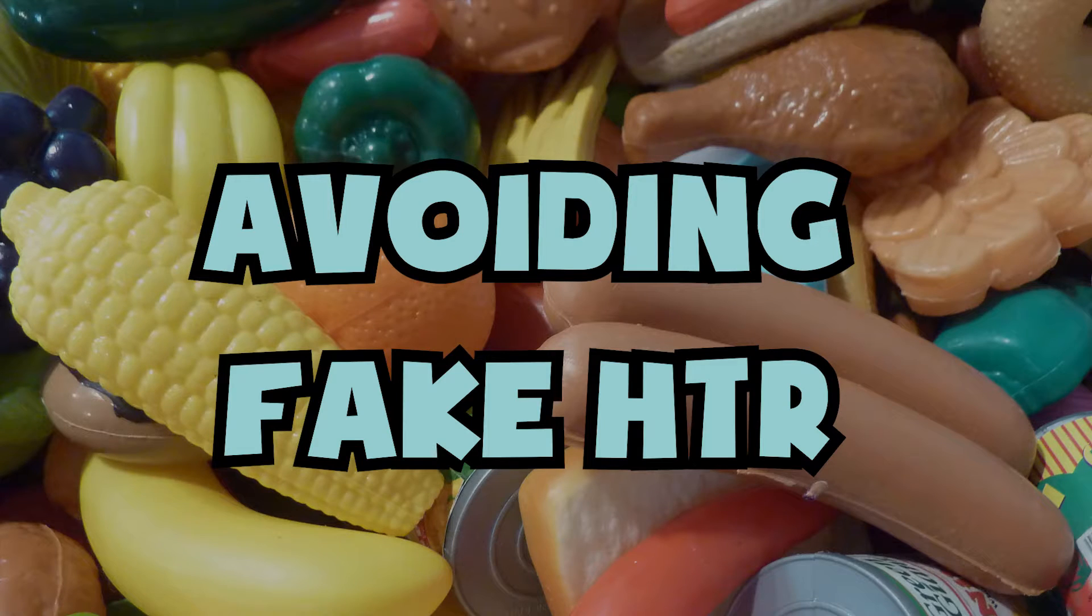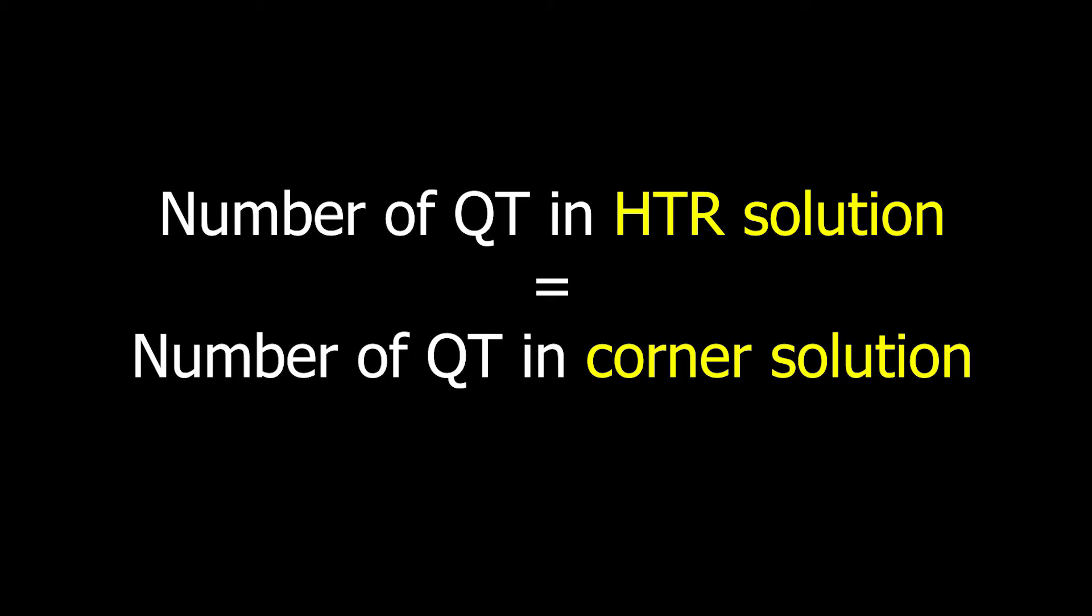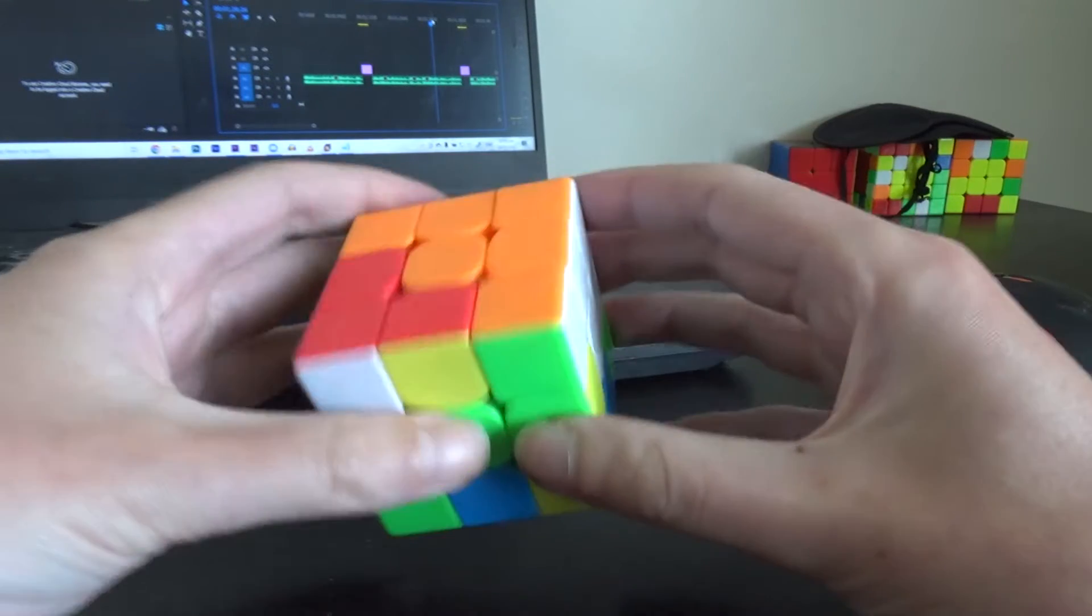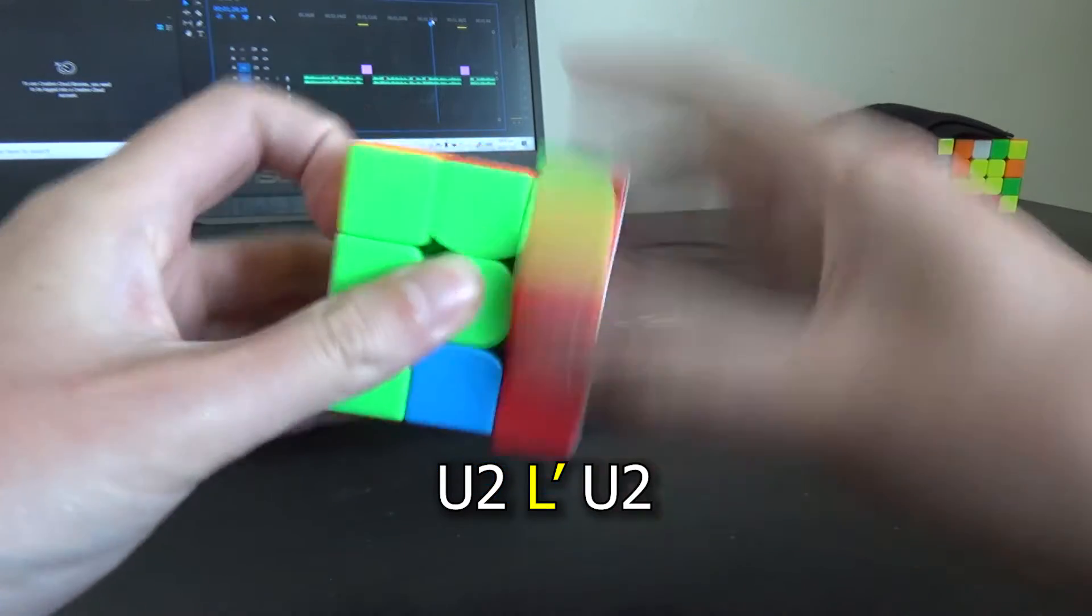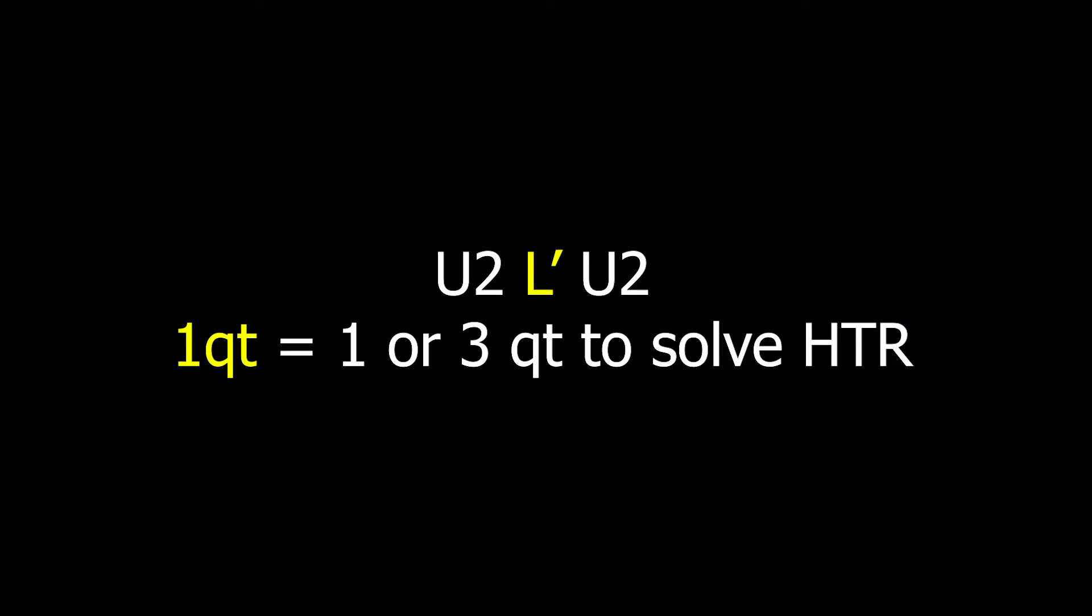How do we avoid fake HTR? Well, the number of quarter turns in your HTR solution has to be the same as the number of quarter turns in your optimal corner solution. Or sometimes you'll have to add two, but has to be the same or plus two. This is ignoring half turns, so if your corners are solvable with U2 L' U2, that's one quarter turn being the L, which means you need to use one or three quarter turns to solve HTR.